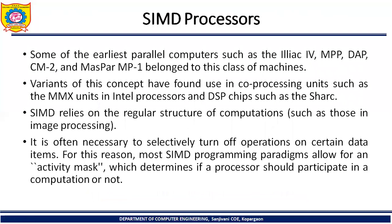For SIMD processors, some of the earliest parallel computers such as ELAC4, MPP, DAP, CM2, and MSPAR MP1 belong to this class of machines. Variants of this concept have found use in coprocessing units such as the MMX units in Intel processors and DSP chips. SIMD relies on regular structure of computation such as those in image processing. It is often necessary to selectively turn off operations on certain data atoms, so most SIMD programs allow for an activity mask which determines if the processor should participate in computation or not.